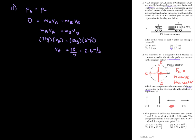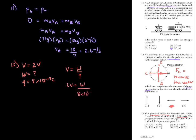Number thirteen: the potential difference between two points is 2 volts — the same as voltage. We're looking for the work (energy) required to move a charge of 8.0 × 10⁻¹⁹ coulombs. Using the equation V = W/Q: 2 = W / (8 × 10⁻¹⁹). Solving gives the work, which is choice two.